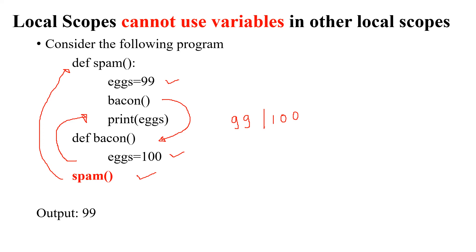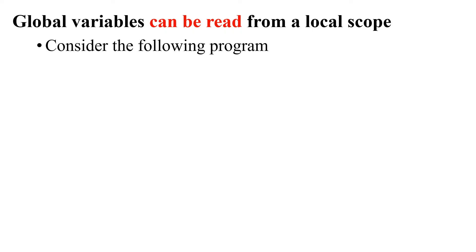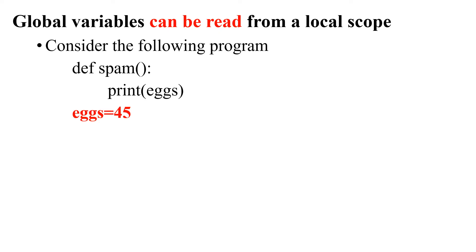Next, we'll consider: global variables can be read from a local scope. That means a variable defined globally can be accessed from inside a local function. Consider the following program: I define a function called spam, inside which I print the value of x. Outside the function, I assign x equal to 45, then call the function spam.